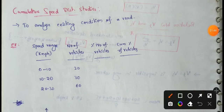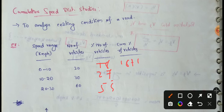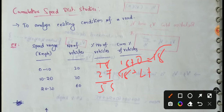For the cumulative percentage of vehicles: the first cumulative value is 18. Adding 18 plus 27 gives the next cumulative value of approximately 45. Adding further values gives 55. These cumulative percentages are plotted against speed ranges.